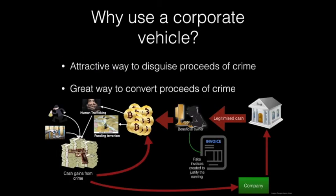Why do beneficial owners use corporate vehicles? It is an attractive way to disguise and convert the proceeds of crime. For example: an organization involved in human trafficking, robbery, terrorism funding, or drug dealing accumulates cash, which then goes into a cash-intensive business. Through false invoices, that cash goes to a bank, which produces legitimised funds used to purchase bitcoin, which is then used to fund further criminal activity — and the cycle continues.